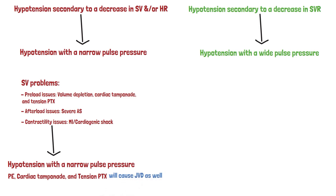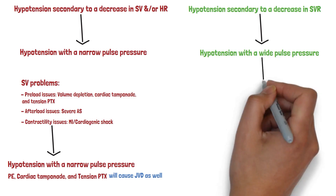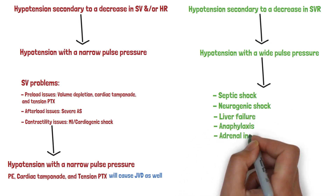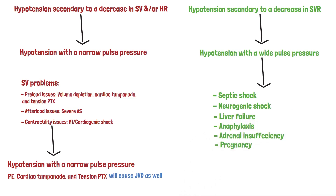What about decreased systemic vascular resistance differentials? The most common is septic shock, then neurogenic shock, liver failure, anaphylaxis, adrenal insufficiency, pregnancy, and medications like propofol. These problems cause hypotension with a wide pulse pressure — very important to remember. So, assess the pulse pressure in any hypotensive patient to guide your differential diagnosis along with history and physical exam. I highly recommend you keep a list of these differentials on your phone.